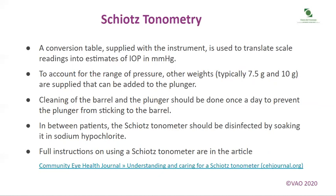A conversion table supplied with the instrument is used to translate scale readings into estimates of IOP in millimetres of mercury. To account for the range of pressure, other weights — typically 7.5g and 10g — can be added to the plunger. Cleaning of the barrel and the plunger should be done once a day to prevent sticking. Between patients, the Schiotz tonometer should be disinfected by soaking it in sodium hypochlorite. Full instructions are in the Community Eye Health Journal article 'Understanding and Caring for a Schiotz Tonometer', available at cehjournal.org.